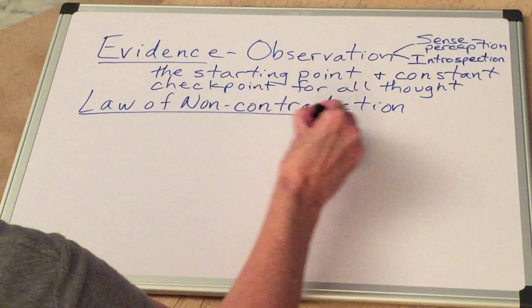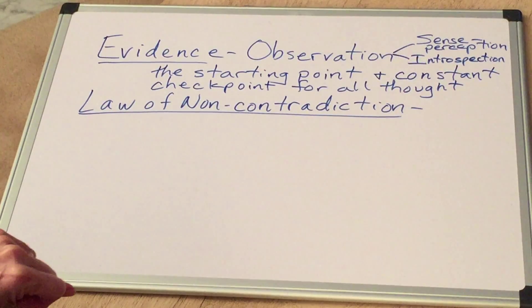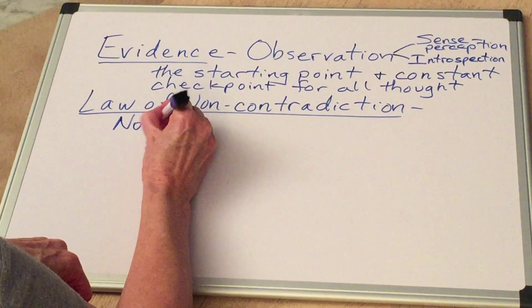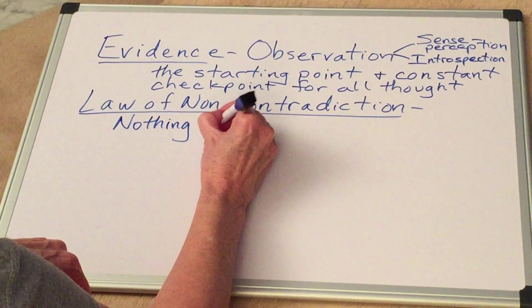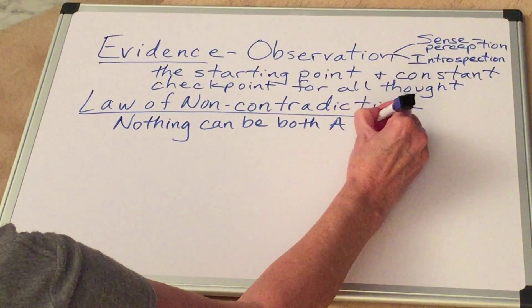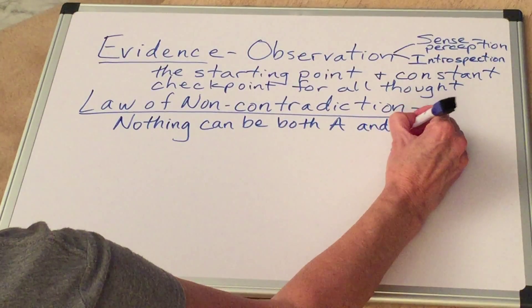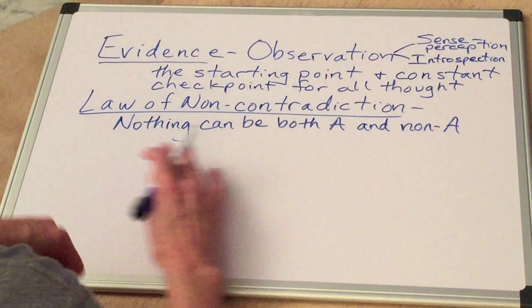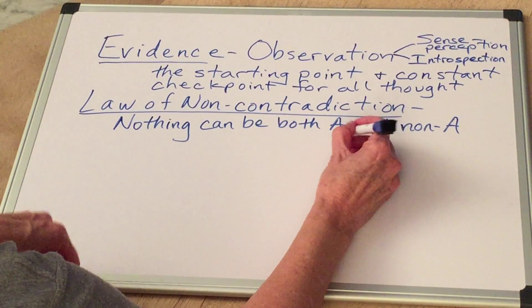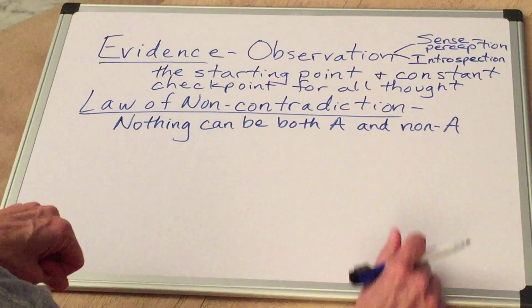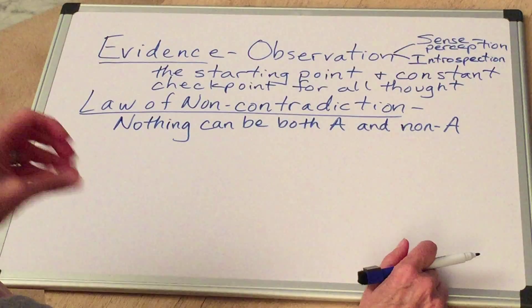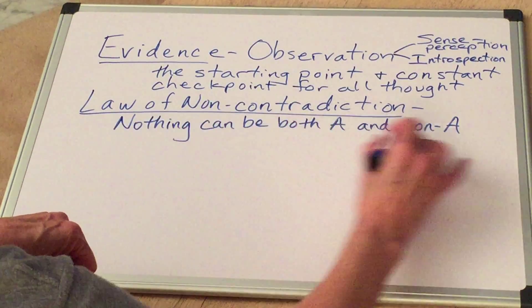How about the law of non-contradiction? The basic idea of this is that nothing can be both A and non-A. I can't both be making marks on this whiteboard right now and not making marks on this blackboard right now. That would be a contradiction and that's impossible. But this is not the complete statement of the law. Remember it has a couple qualifications that need to be made.